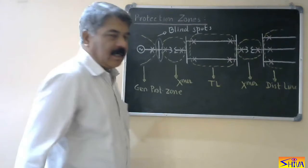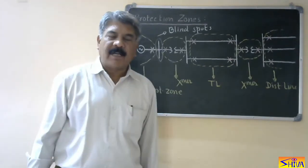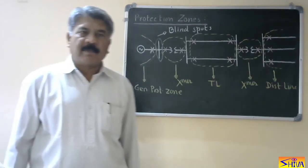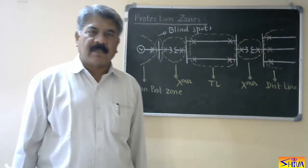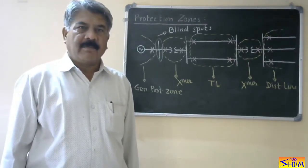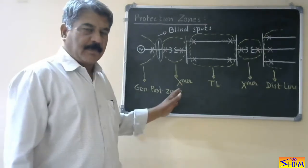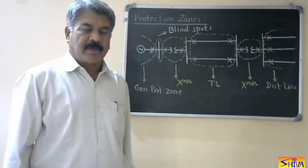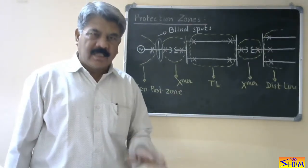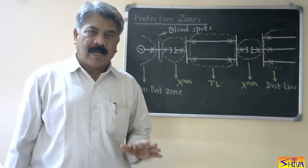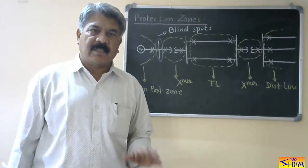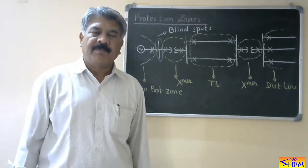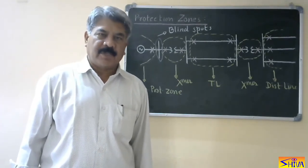These parts are called blind spots. A blind spot is the part of the power system which is not covered by any protection zone.